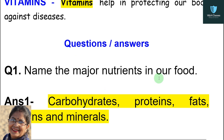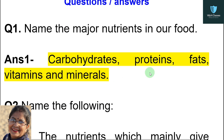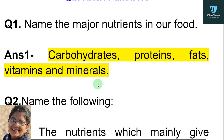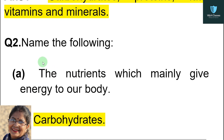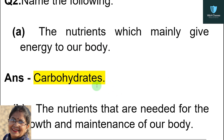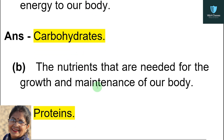Now, questions and answers. First question: name the major nutrients in our food. Answer: carbohydrates, proteins, fats, vitamins, and minerals. Second question: name the following — the nutrients which mainly give energy to our body. Answer: carbohydrates.